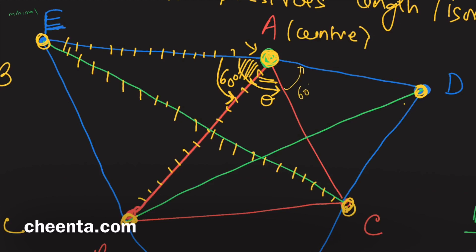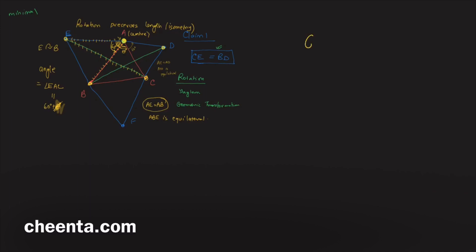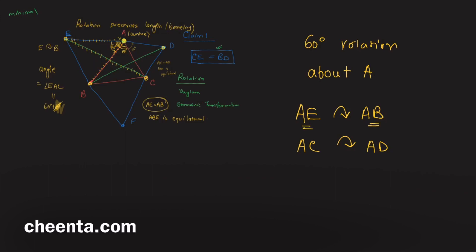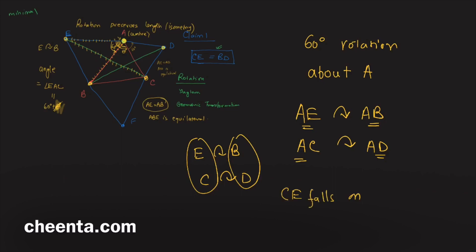Similarly, AC will fall exactly on AD: this angle is also 60° and AC equals AD because triangle ACD is equilateral. So a 60° rotation about A does the trick: AE falls on AB and AC falls on AD. Their sizes are equal because both are equilateral triangles, so E falls on B, C falls on D, and therefore CE falls precisely on BD.